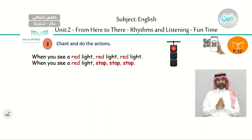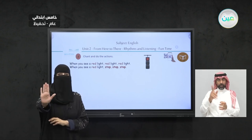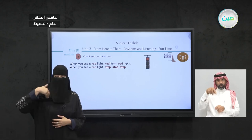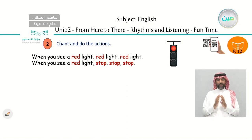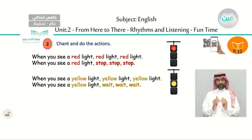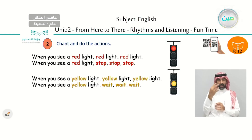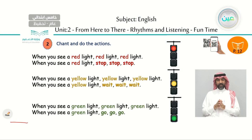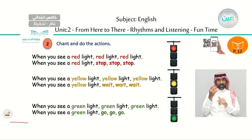Let's read it together. Now when we chant together, I want you to do the action. When we say stop, you do like this — stop. Wait like this. Go — you can do like this. Chant after me please. When you see a red light, red light, red light. When you see a red light, stop, stop, stop. When you see a yellow light, yellow light, yellow light. When you see a yellow light, wait, wait, wait. When you see a green light, green light, green light. When you see a green light, go, go, go.